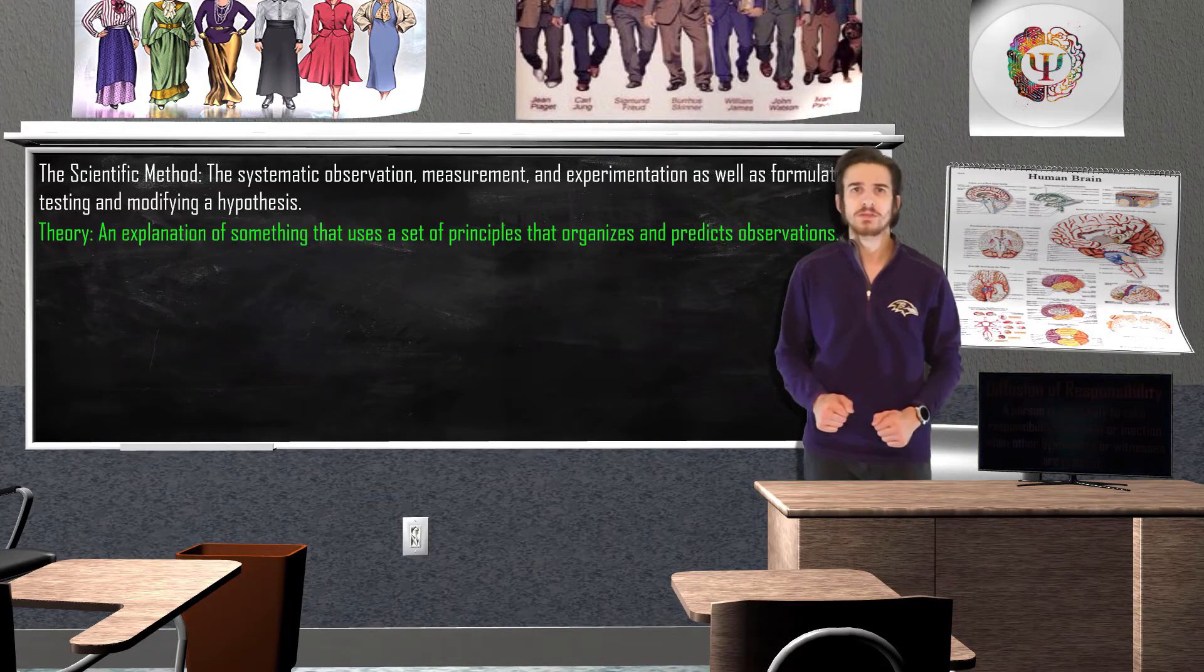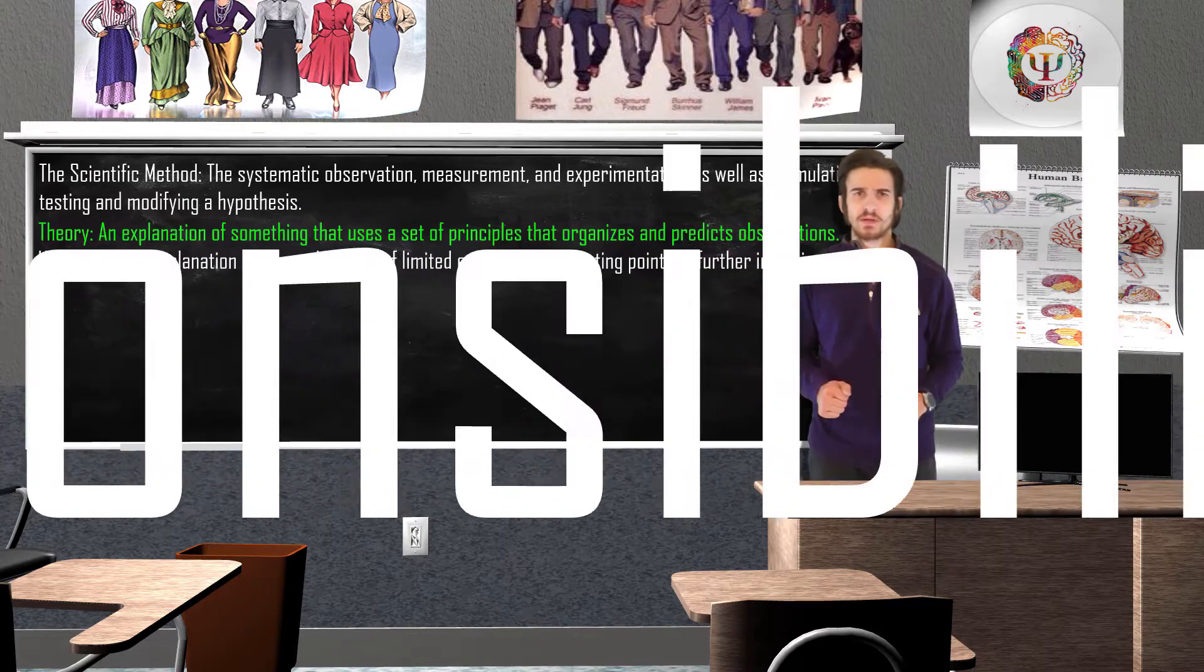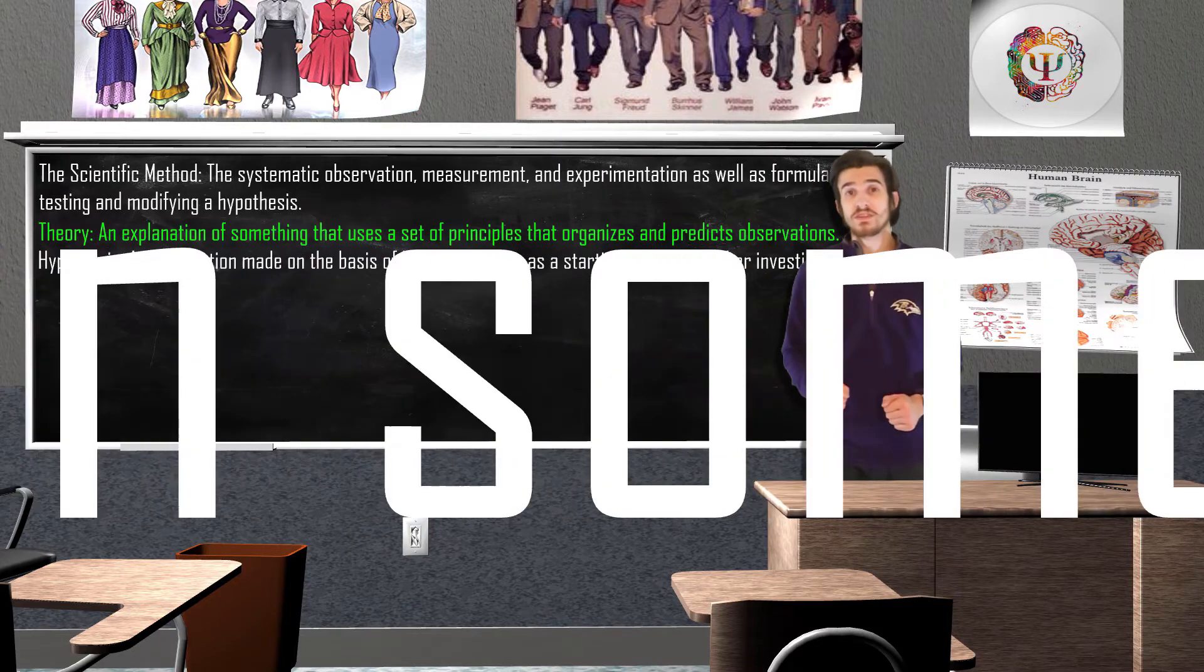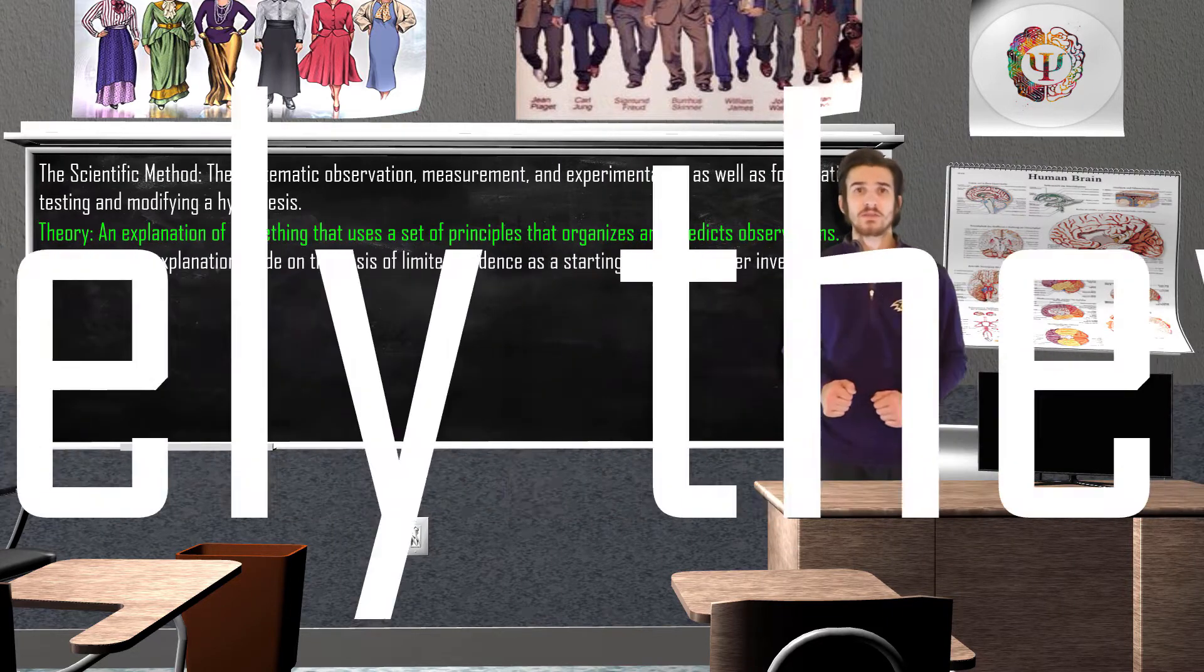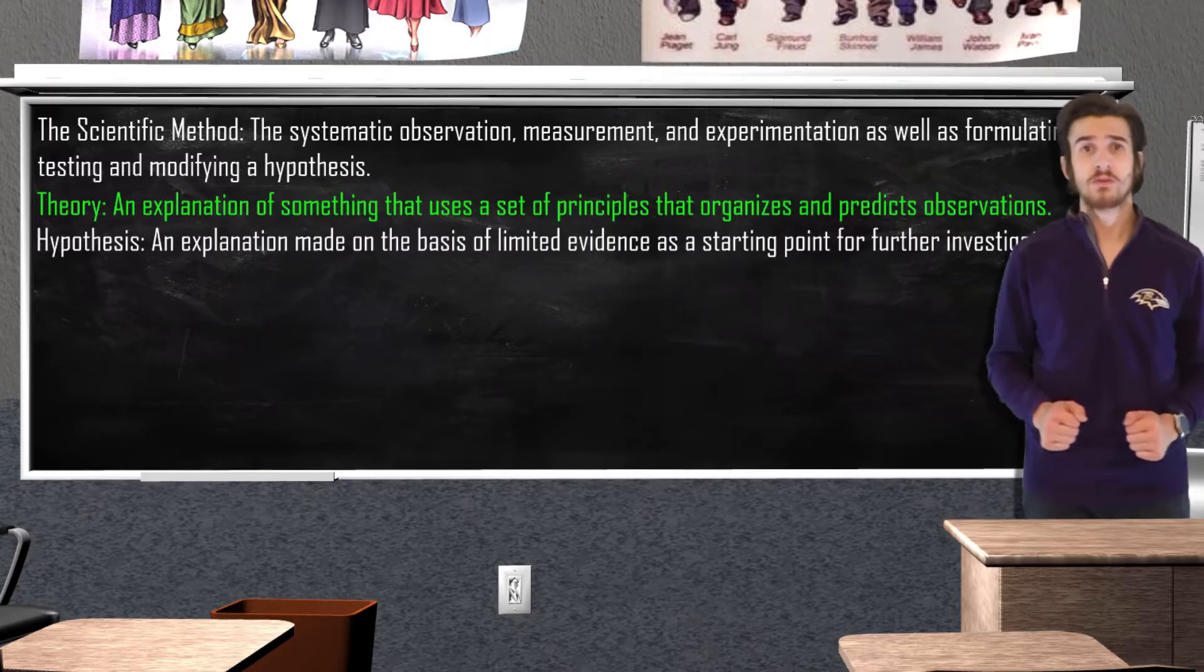Every theory must include some type of testable prediction that we call a hypothesis. If our hypothesis states that as a result of diffusion of responsibility, the more people present when someone is in need of aid, the less likely an individual will help, we could set up an experiment revolving around this educated assessment in an attempt to see if we are correct.